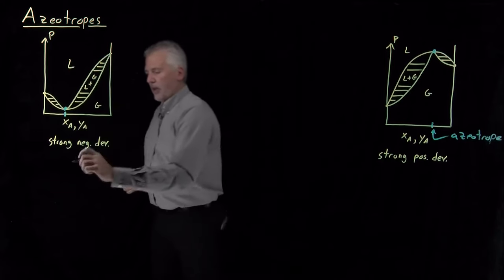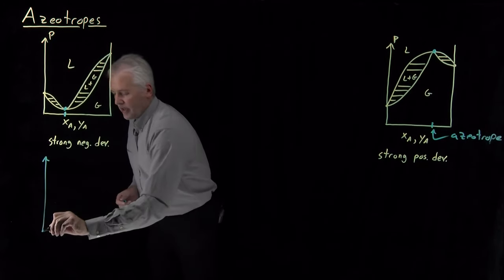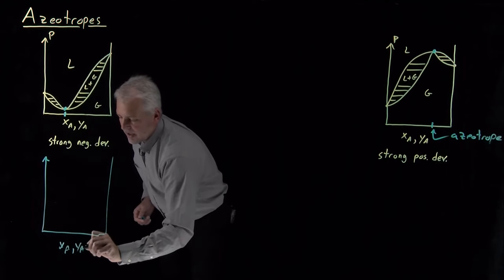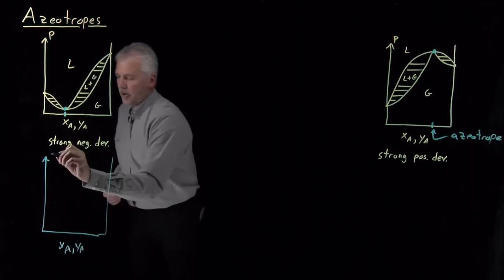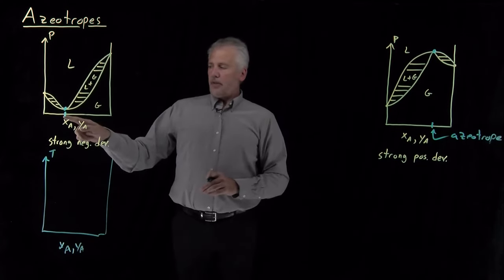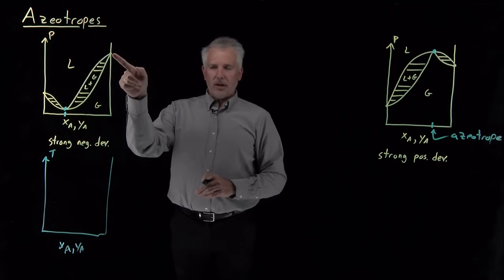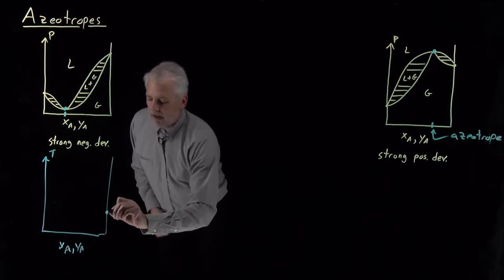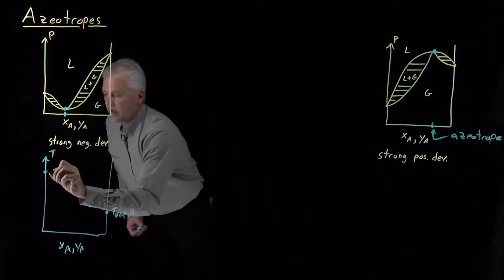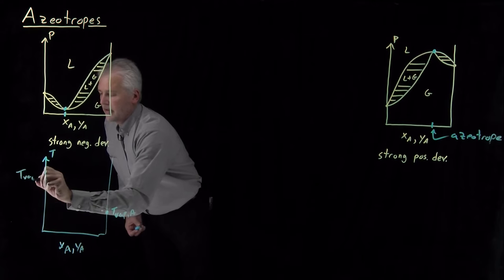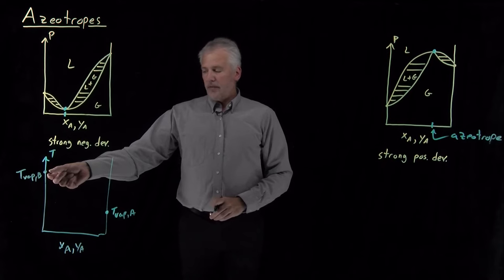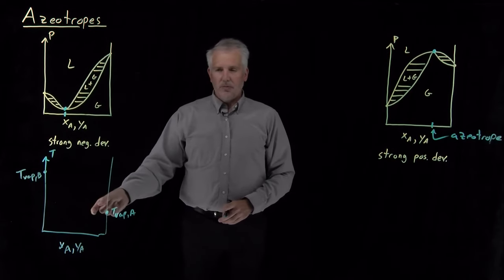If we redraw these phase diagrams as a temperature-composition phase diagram — plotting not the vapor pressure of the solution, but the boiling point — the more volatile component A will have a lower boiling point than the other component. The ideal solution behavior would have relatively smooth curves connecting these two positions.